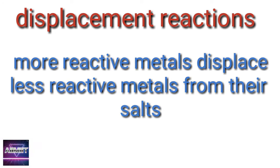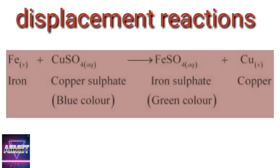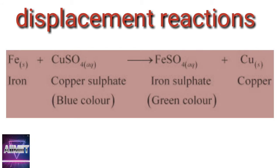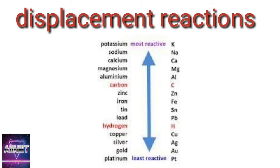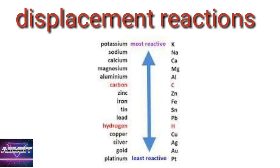The key concept in displacement reactions is the reactivity series. More reactive metals displace less reactive metals from their salts. For example, iron reacts with copper sulfate to form iron sulfate and copper, because iron is more reactive than copper. However, copper plus iron sulfate does not react, because copper is less reactive than iron and cannot displace it from iron sulfate.